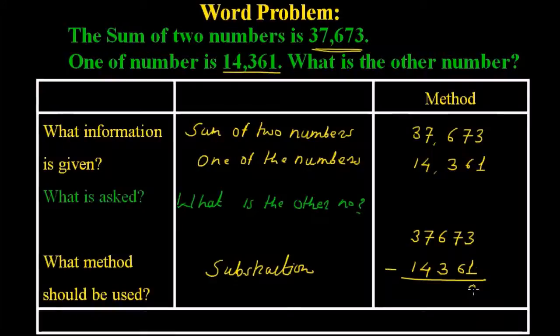If you do the subtraction, 3 minus 1 is 2, 7 minus 6 is 1, 6 minus 3 is 3, 7 minus 4 is 3, and 3 minus 1 is 2. The answer is 23,312.